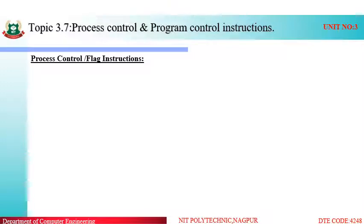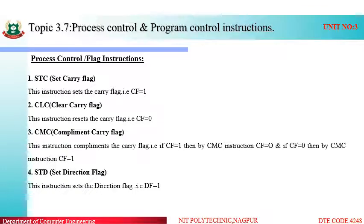Coming to the process control instructions, or flag instructions — these instructions are basically used to control the different types of flags present inside our flag register. The flag register stores the status of the result generated by the ALU. All these flag instructions are implicit addressing mode instructions, meaning those instructions which consist only of an opcode — no operand will be specified.